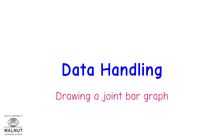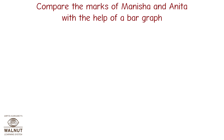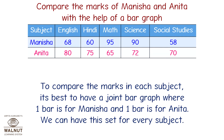Data handling: drawing a joint bar graph. To compare the marks of Manisha and Anita with the help of a bar graph, it's best to have a joint bar graph where one bar is for Manisha and one bar is for Anita. We can have this set for every subject.